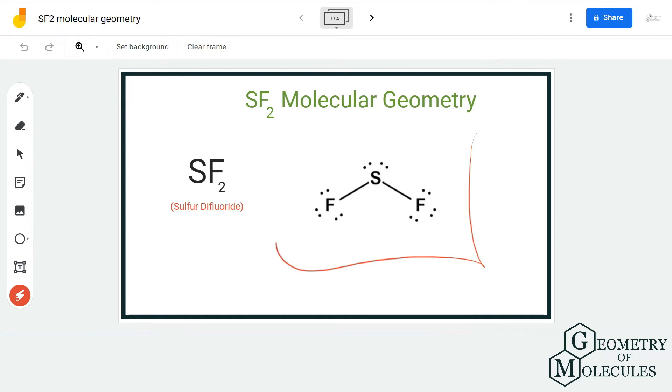So this is the Lewis structure of SF2. The sulfur atom is forming two single bonds with two fluorine atoms, but besides that there are two lone pairs of electrons that we have to take into consideration while we are looking at its molecular geometry. The Lewis structure does give an idea about the arrangement of electrons and atoms, but we have to check its shape to determine its molecular geometry.